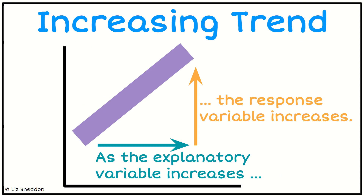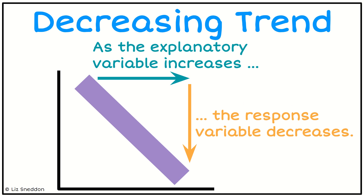If we have an increasing trend, when I come to justify this I'm always going to refer first of all to my explanatory variable, which is the horizontal axis. I always want to say as my explanatory variable increases, the response variable is going to be increasing. Whereas if I have a decreasing trend, I would say as my explanatory variable increases, the response variable decreases. We need to be able to do one or the other of these to justify the relationship.